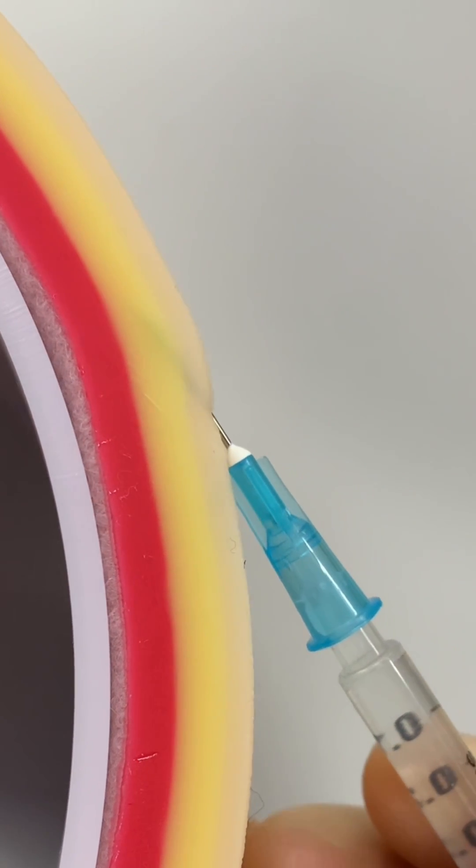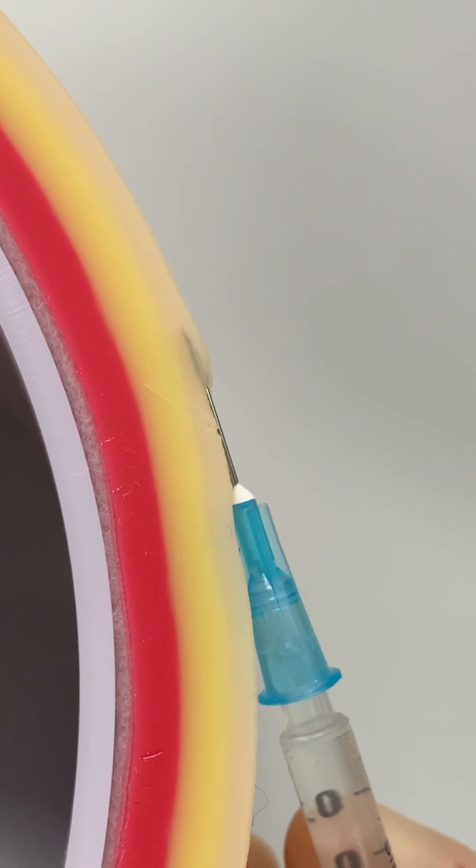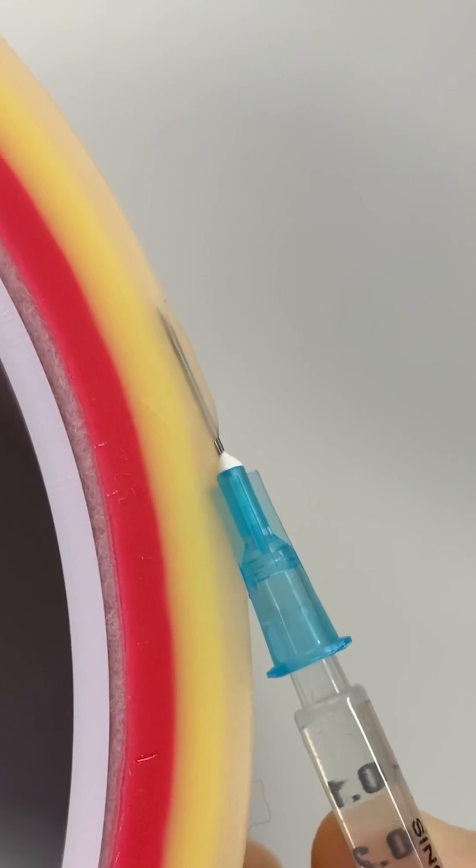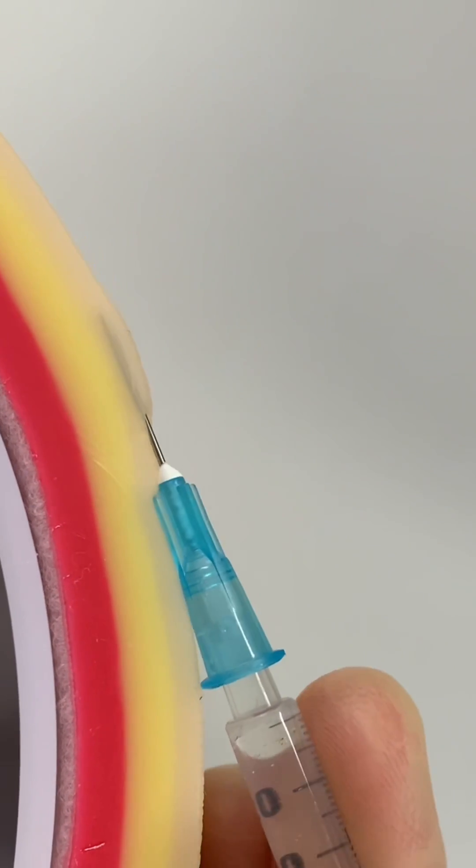Holding the syringe like a dart can give better control and stability of the needle. For intradermal injections, the needle is inserted at a 5 to 15 degree angle, depending on the thickness of the skin. It enters the middle layer of the skin and the medication forms a little bubble under the skin surface.